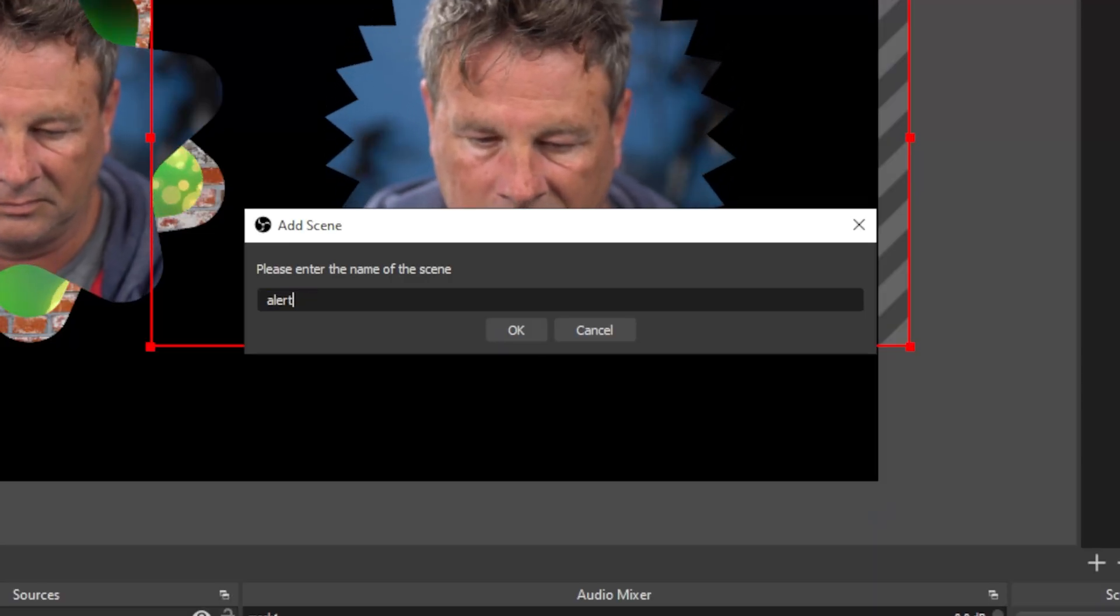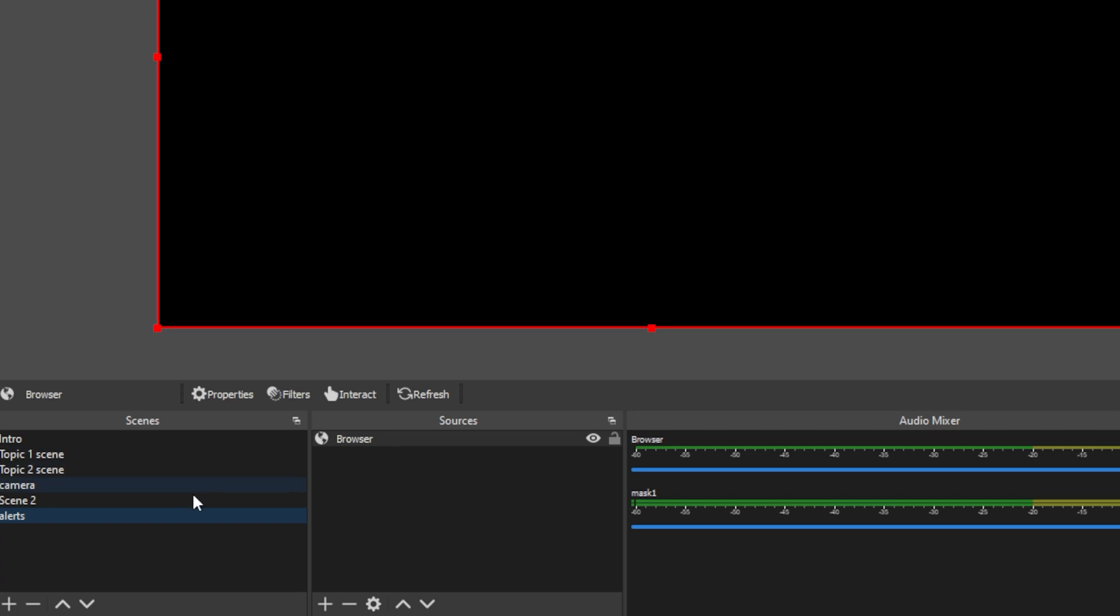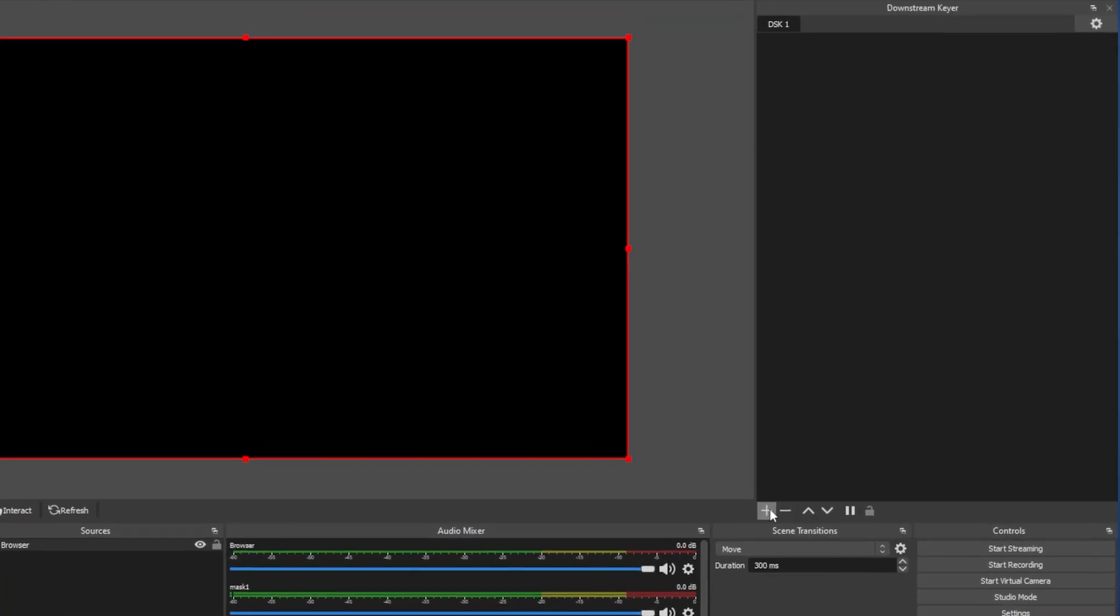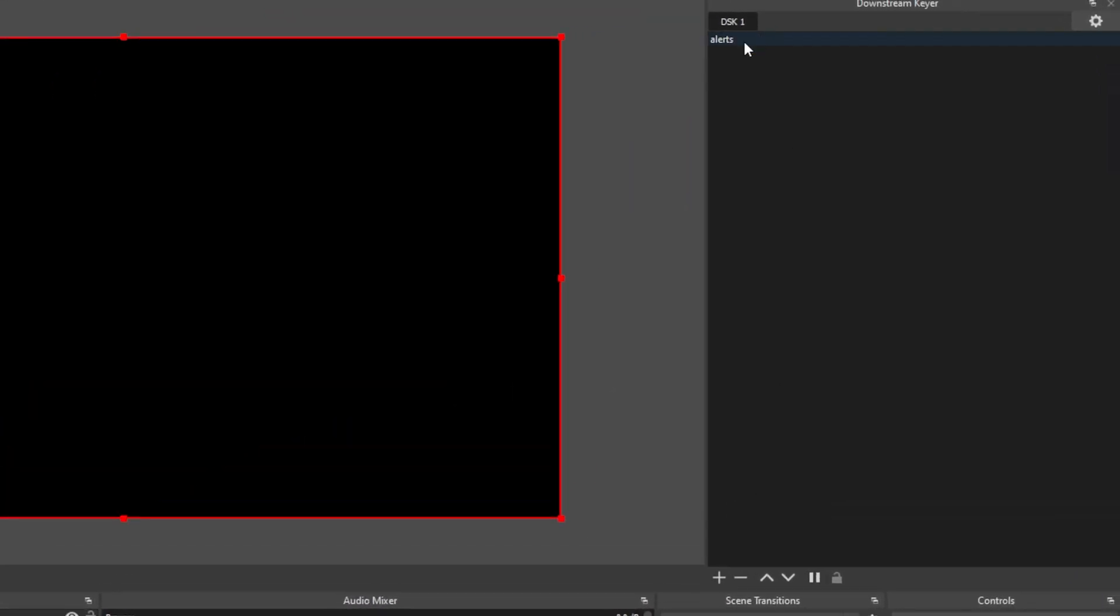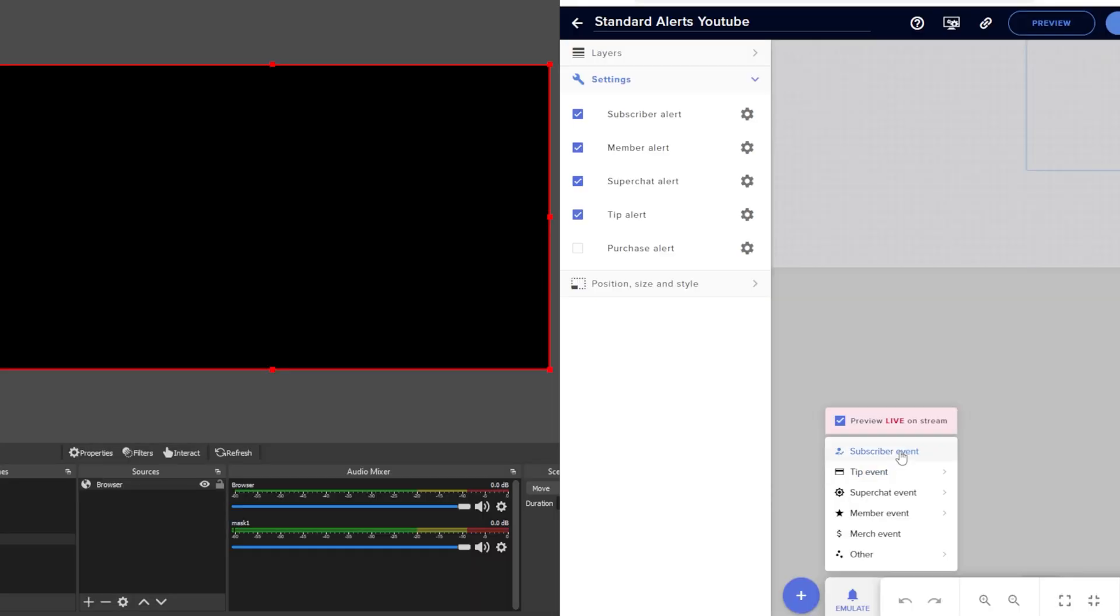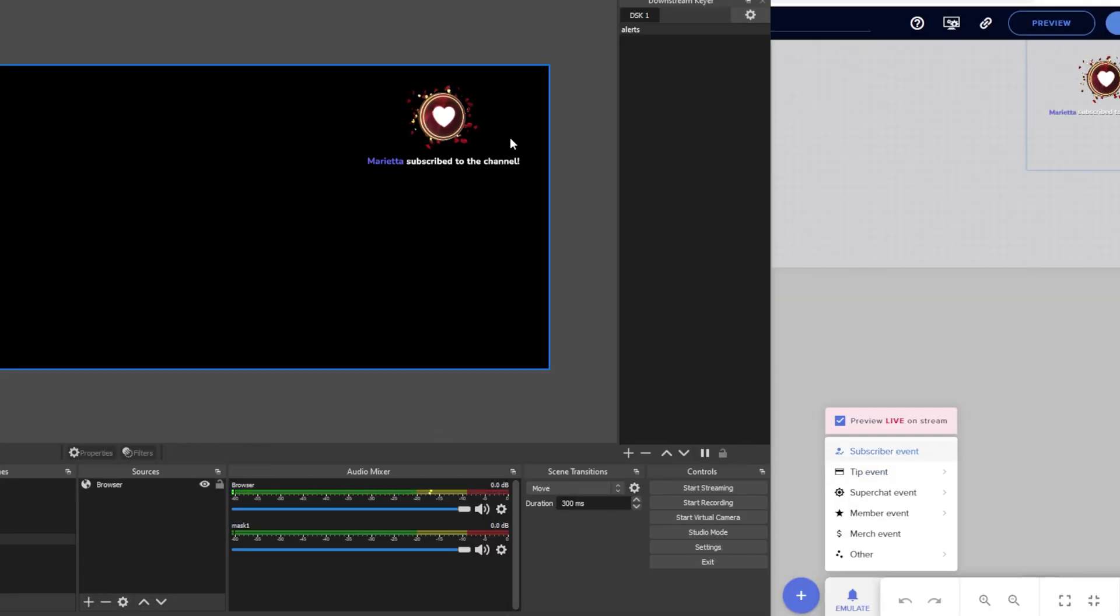You create a scene with the alerts in it. You then add that scene to the downstream keyer and select it here and boom, now your alerts are going to be in every single scene. But there's so much more you can do here.